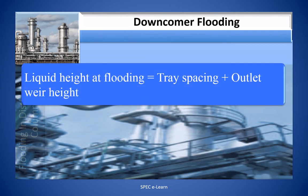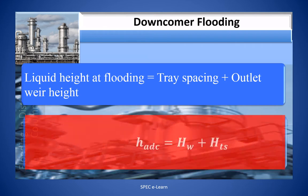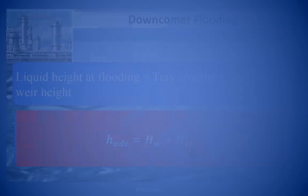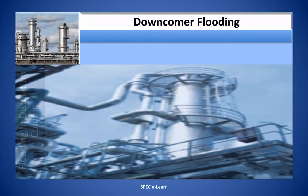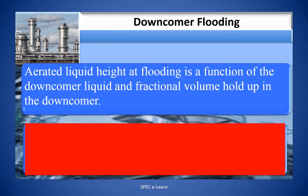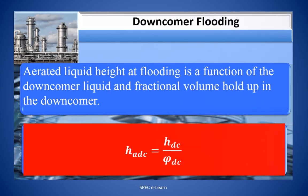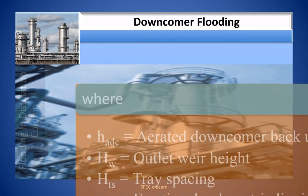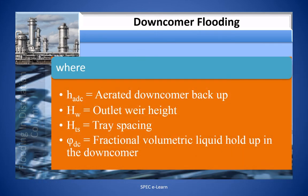The liquid height at flooding is tray spacing plus outlet weir height, so H_ADC = H_W + H_TS. The aerated liquid height at flooding is a function of downcomer liquid and fractional volume holdup within the downcomer: H_ADC = H_DC / φ_DC, where φ_DC is the fractional volumetric holdup. H_ADC is the aerated downcomer backup, H_W is the outlet weir height, H_TS is the tray spacing, and φ_DC is the fractional volumetric holdup in the downcomer. The values of φ_DC for gases will vary depending upon the density as well as the foaming tendency.